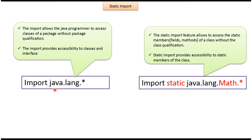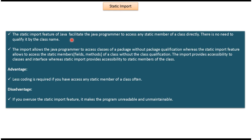Import provides accessibility to classes and interfaces. Static import provides accessibility to static members of the class. Static import is a feature of Java that facilitates the Java programmer to access any static member of a class directly — there is no need to qualify it by the class name.